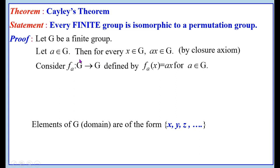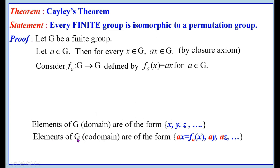The function F_A has domain and codomain both equal to the same group G. The elements of G in the domain group are of the form X, Y, Z, and so on. Here, A is a fixed element, but we can define the function F_A for each and every element of G. Suppose B belongs to G, we can define F_B, where F_L(X) = LX for L belonging to G.